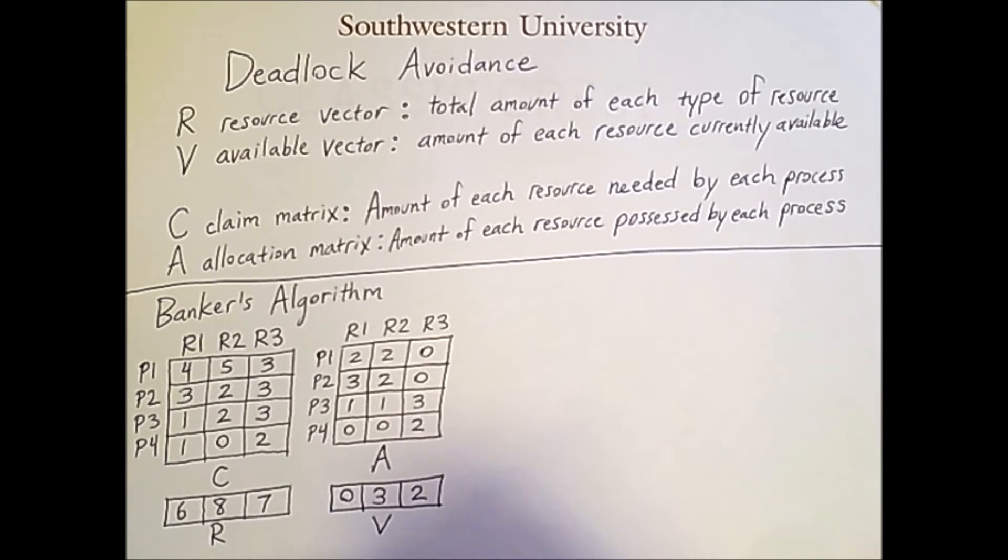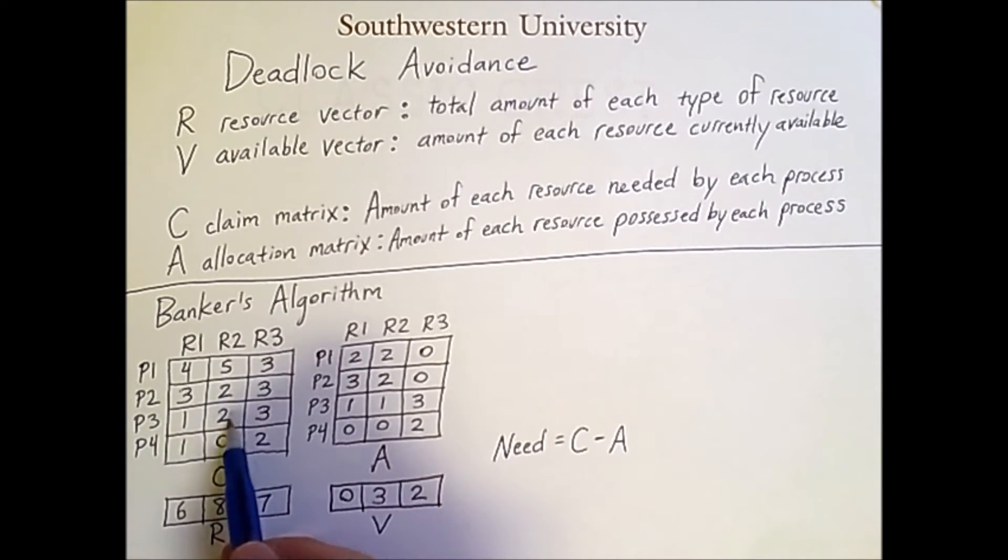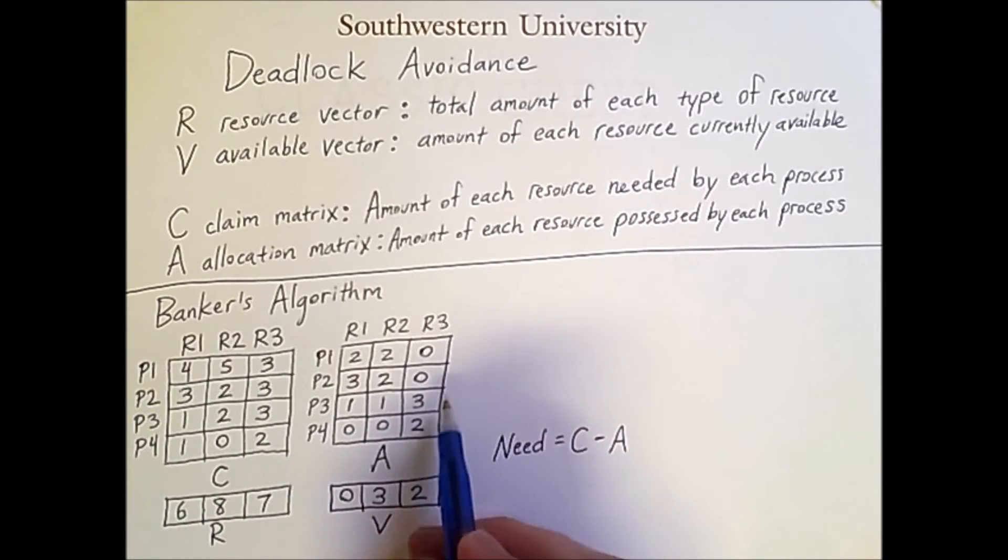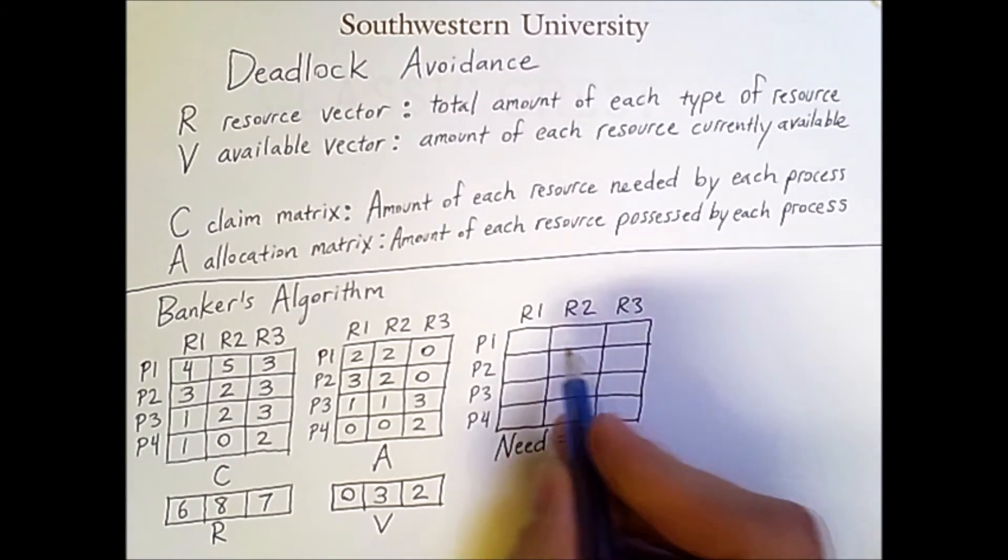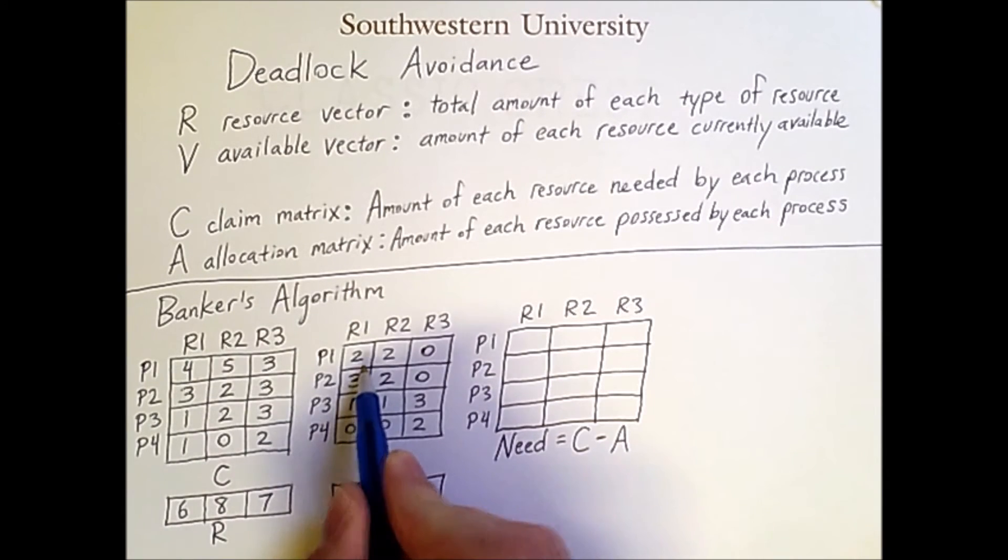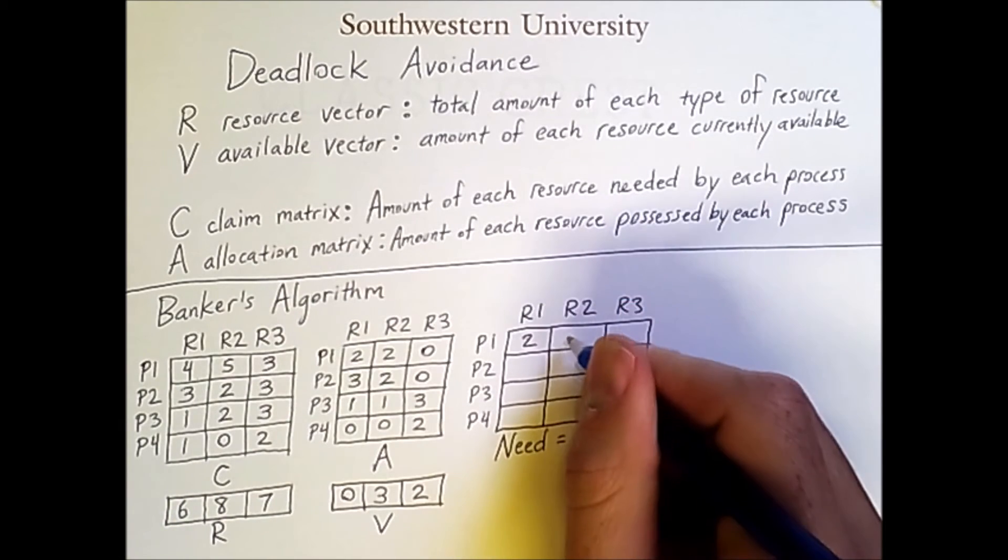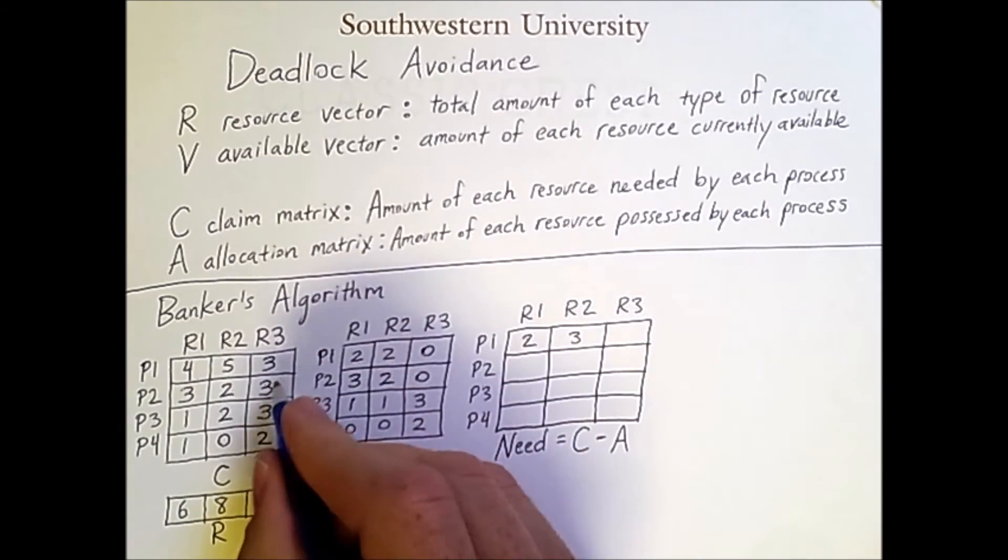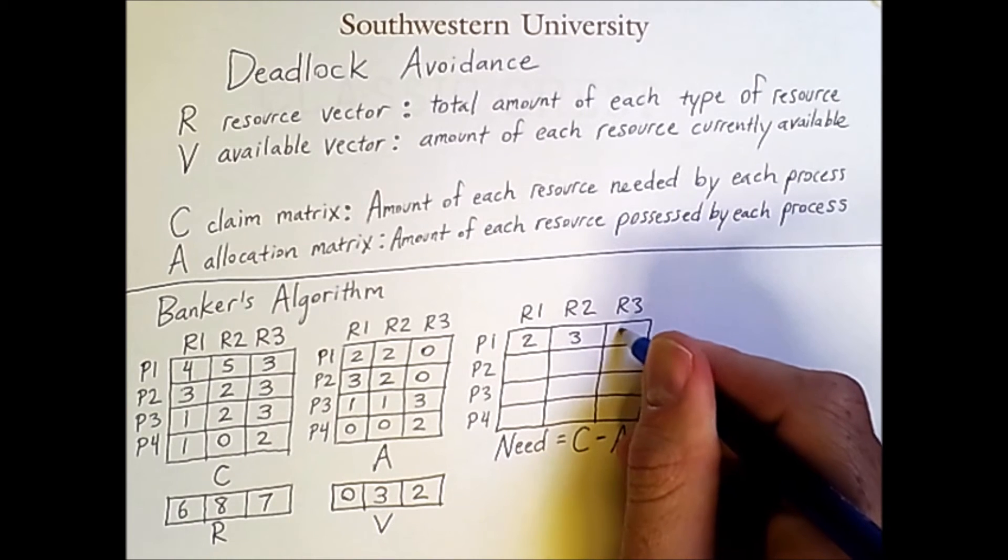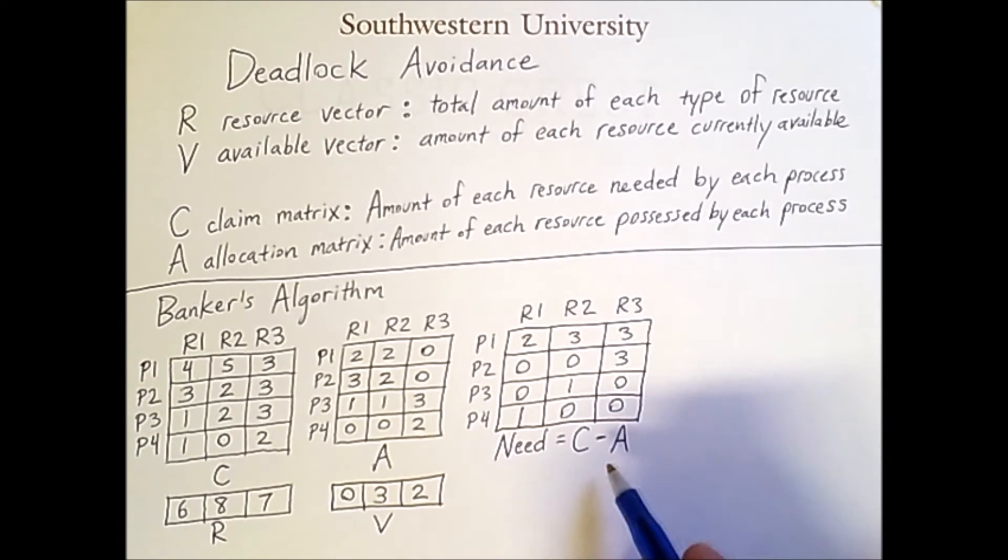The next thing we need to compute is called the need matrix. The need matrix is simply the matrix C minus the matrix A. So to compute this first row, we would do 4 minus 2 is 2, 5 minus 2 is 3, and 3 minus 0 is 3. And you can fill the rest out on your own to get the following. And having computed this need matrix,